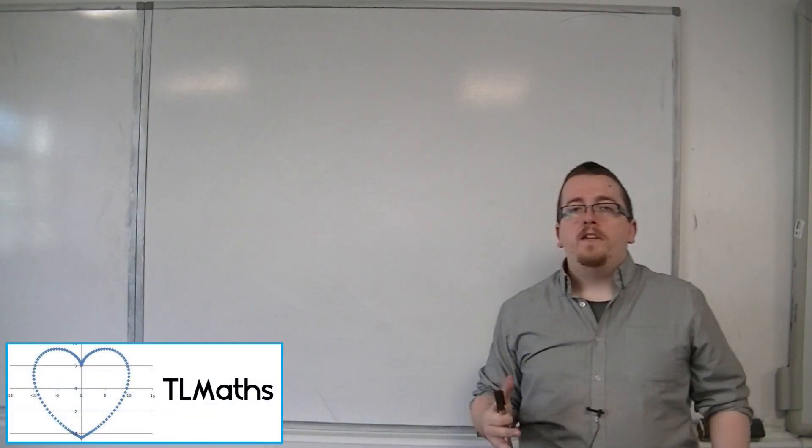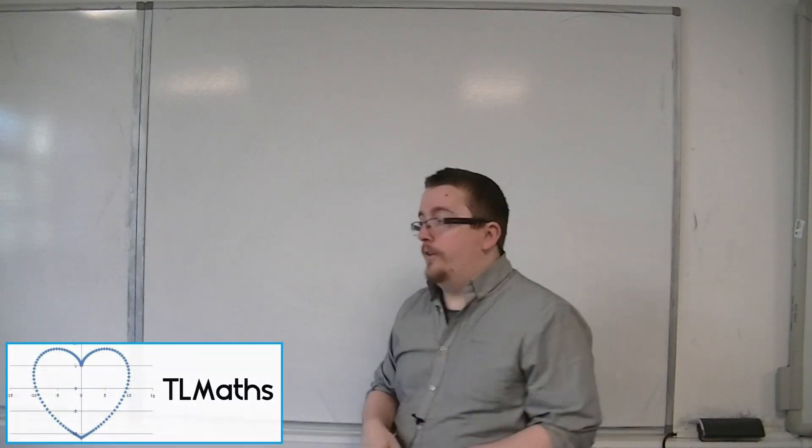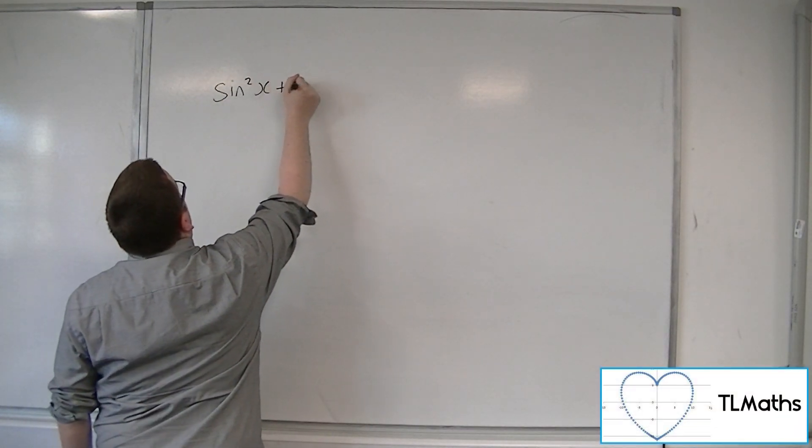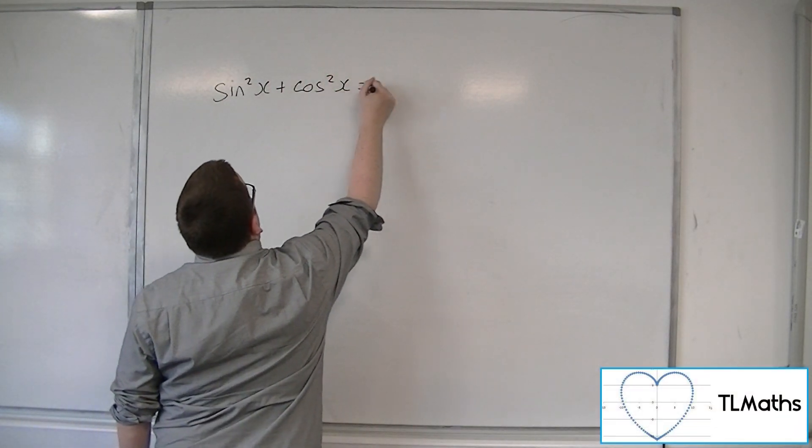One trig identity that you met at core 2 was sine squared x plus cos squared x is equal to 1.